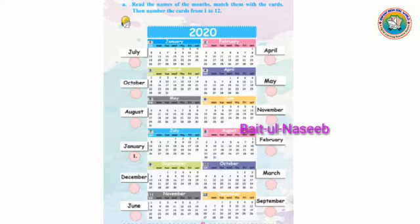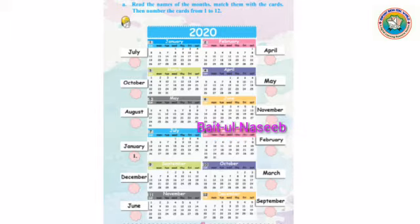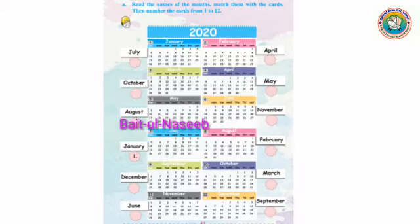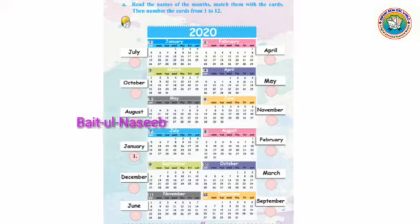फेब्रुअरी, मार्च, एप्रिल, मई, जून, जुलाई, ऑगस्ट, सेप्टेंबर, ऑक्टोबर, नवेंबर, एंड दिसम्बर. अब बेटा, आपको यहाँ पर जो महीनों के, कैलेंडर के महीनों के जो पिक्चर दिये हैं,